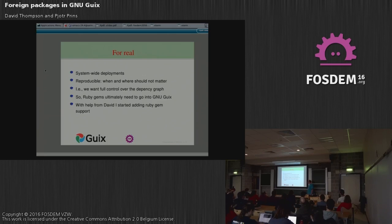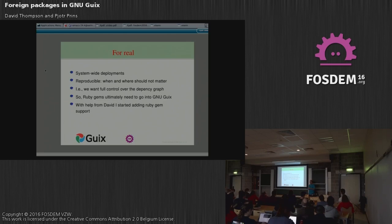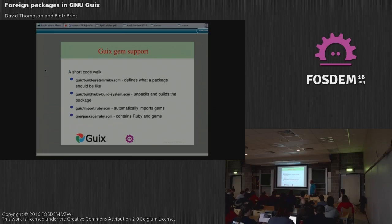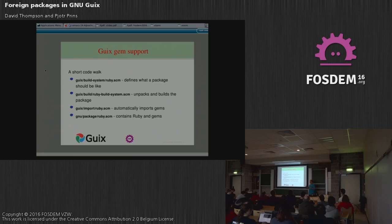Ultimately you decide: gems need to go into GNU Guix. If you want system-wide deployments, put it on servers — it's not going to work if you do this all in your home directory. So together with David, we started adding Ruby gem support to Guix. It wasn't the first foreign build system support since Python and R were already in there. There are actually four files involved. One is called guix-build-system-ruby.scm and it defines what a package should be like — the Ruby build system has a certain layout for its package definition which differs from the GNU build system.